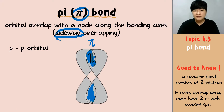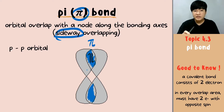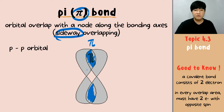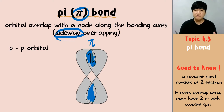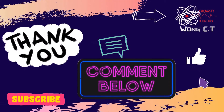That's it for this video about the formation of pi bond and sigma bond by using orbital overlapping. Make sure you practice drawing the formation of pi bond and sigma bond, as it's very important for the rest of this subtopic. If you still have any questions, drop them in the comments below. Please like, share, and subscribe to the channel. Thank you for watching and see you in the next video.